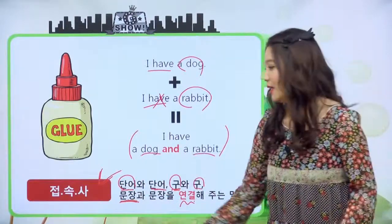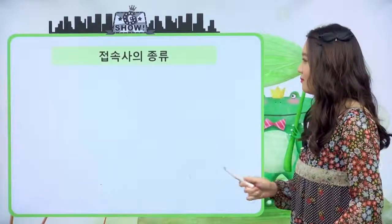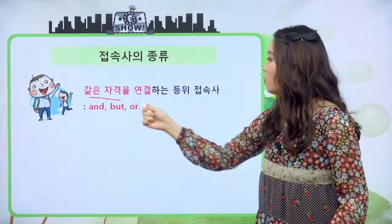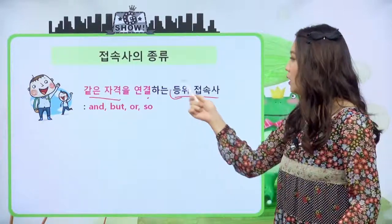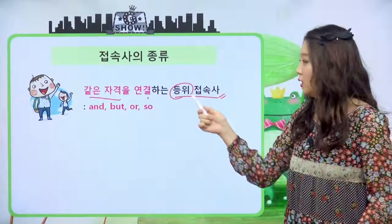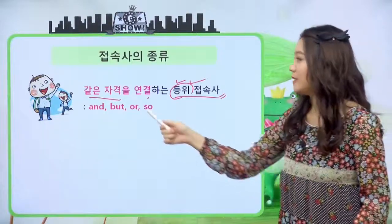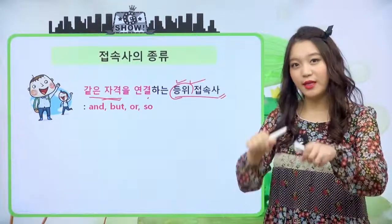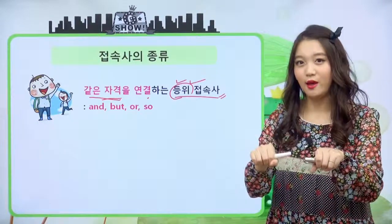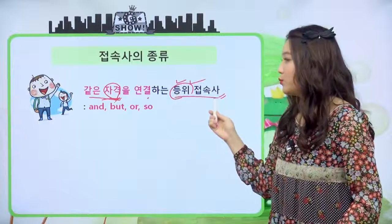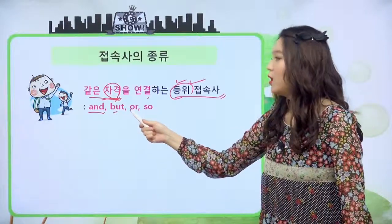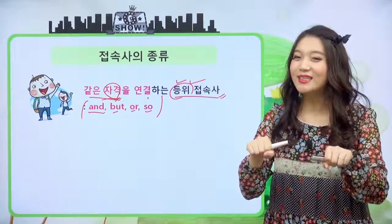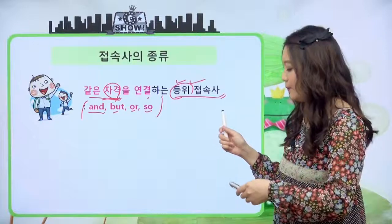오늘은 문법의 접착제인 접속사에 대해서 공부를 해보도록 하겠습니다. 접속사의 종류에 대해서 첫 번째 아웃라인 한번 잡아볼게요. 첫 번째는 같은 자격을 연결하는 등위 접속사예요. 등위는 같은 위치라는 뜻이에요. 두 친구가 서로 위아래가 있는 게 아니라 동등한 자격, 동등한 위치에 있는 것처럼요. 같은 자격을 연결하는 접속사는 and, but, or, so, 이 네 가지예요.